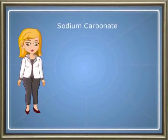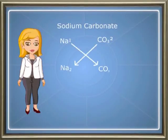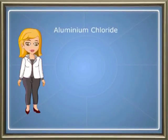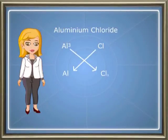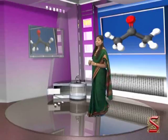Let us write the formula of sodium carbonate. The valency of sodium is 1 and the valency of carbonate is 2. When the numbers are criss-crossed, we get the formula of sodium carbonate as Na2CO3. For aluminium chloride, the valency of aluminium is 3 and chloride is 1. When the numbers are criss-crossed, we get the formula of aluminium chloride as AlCl3.